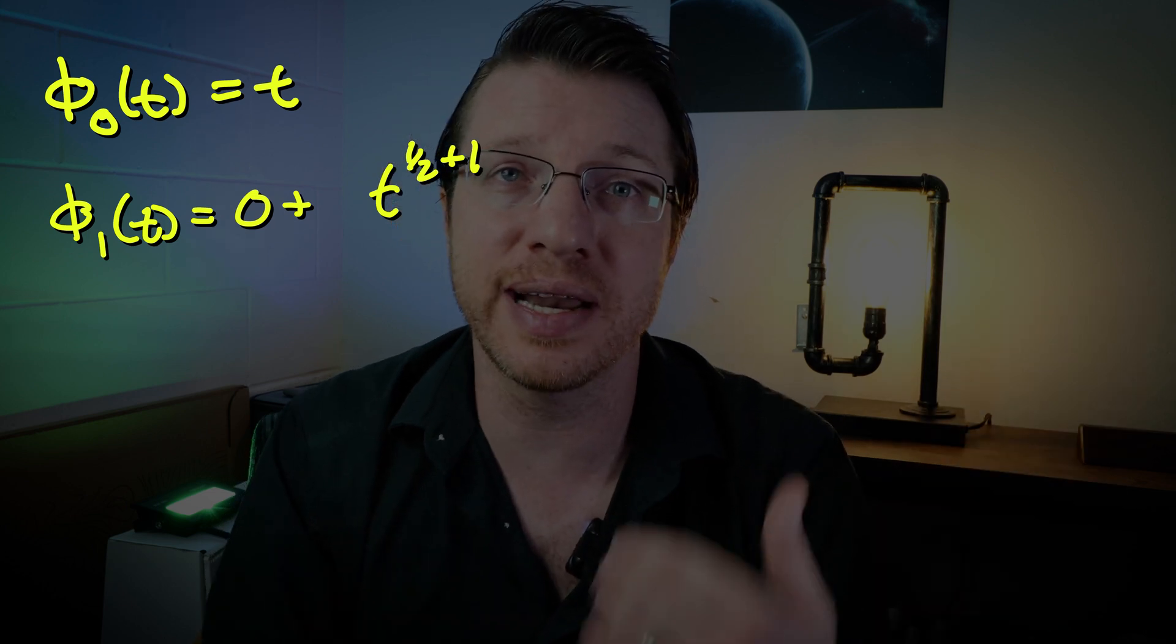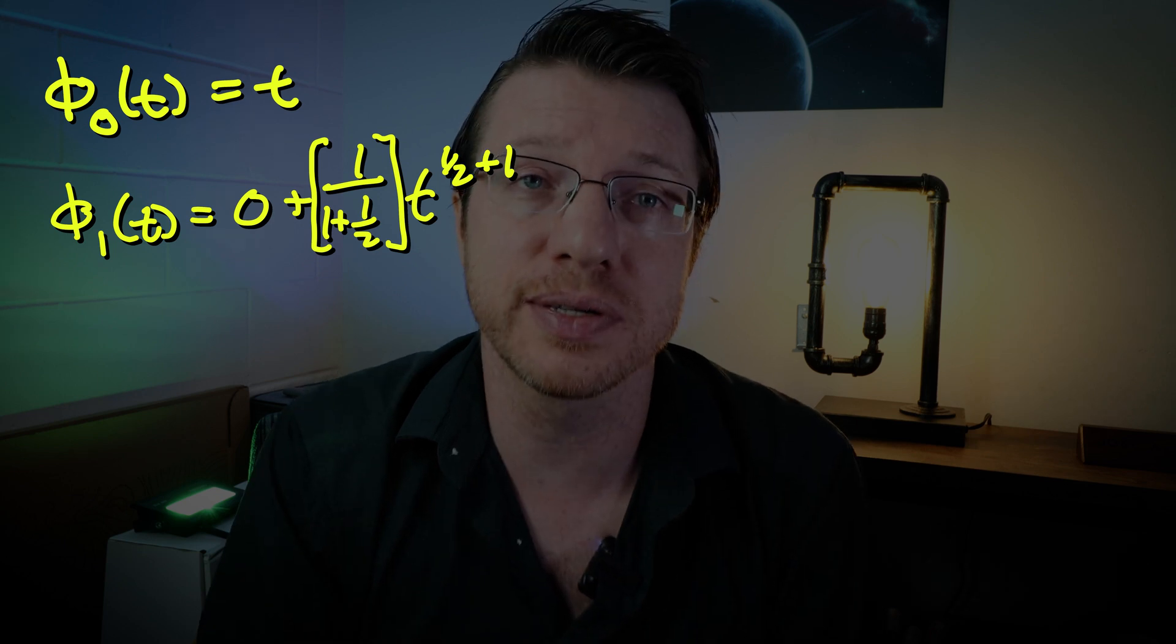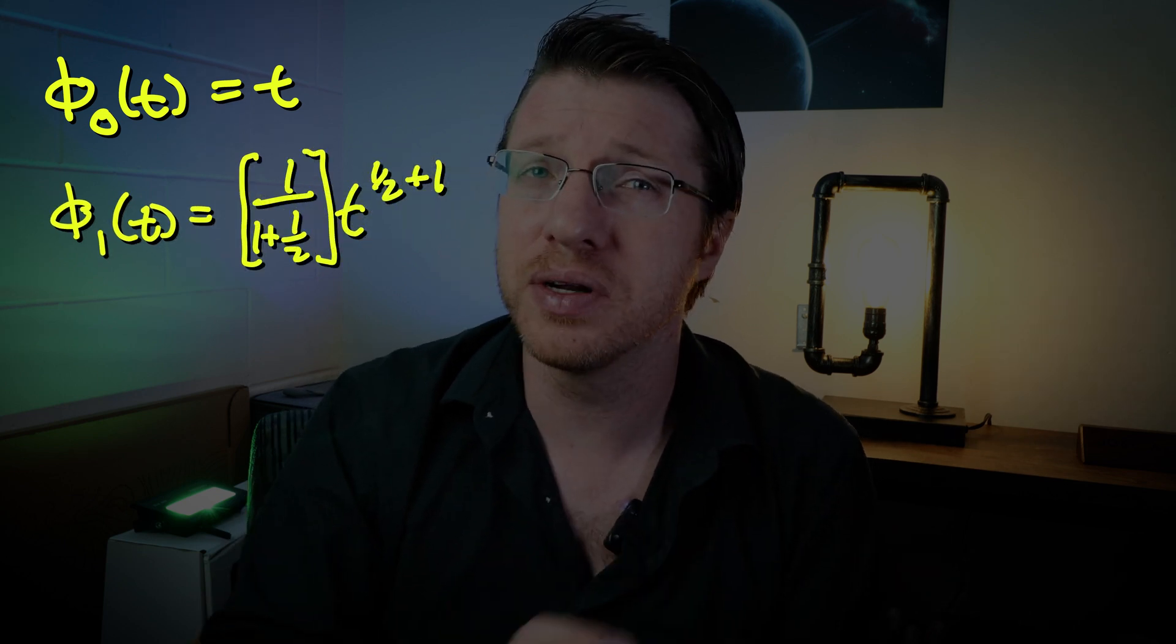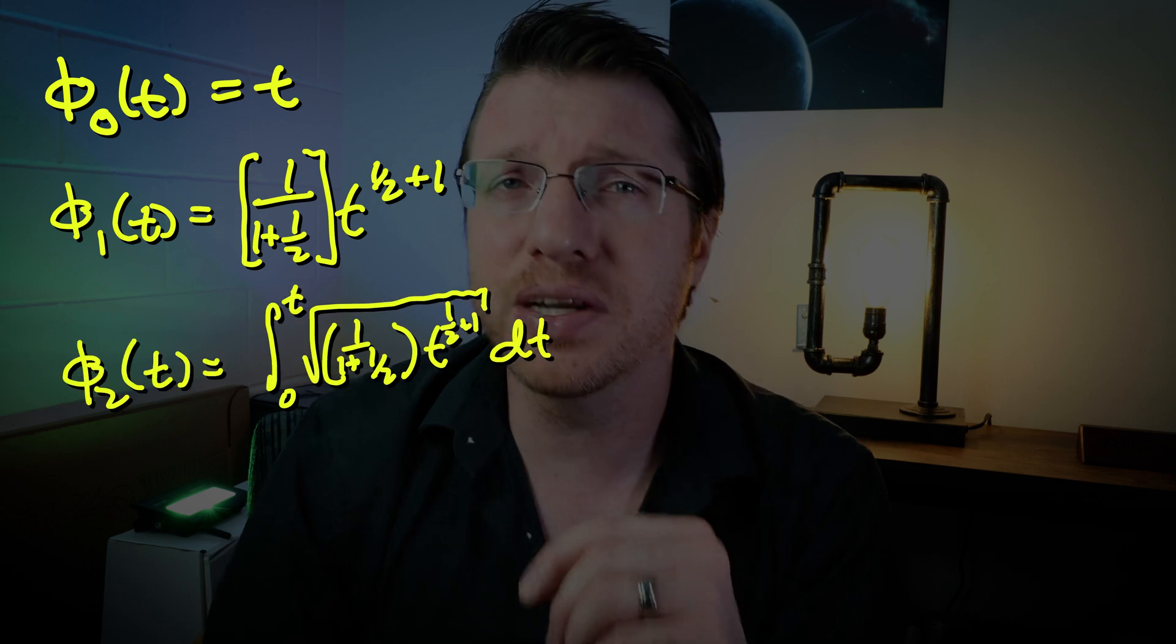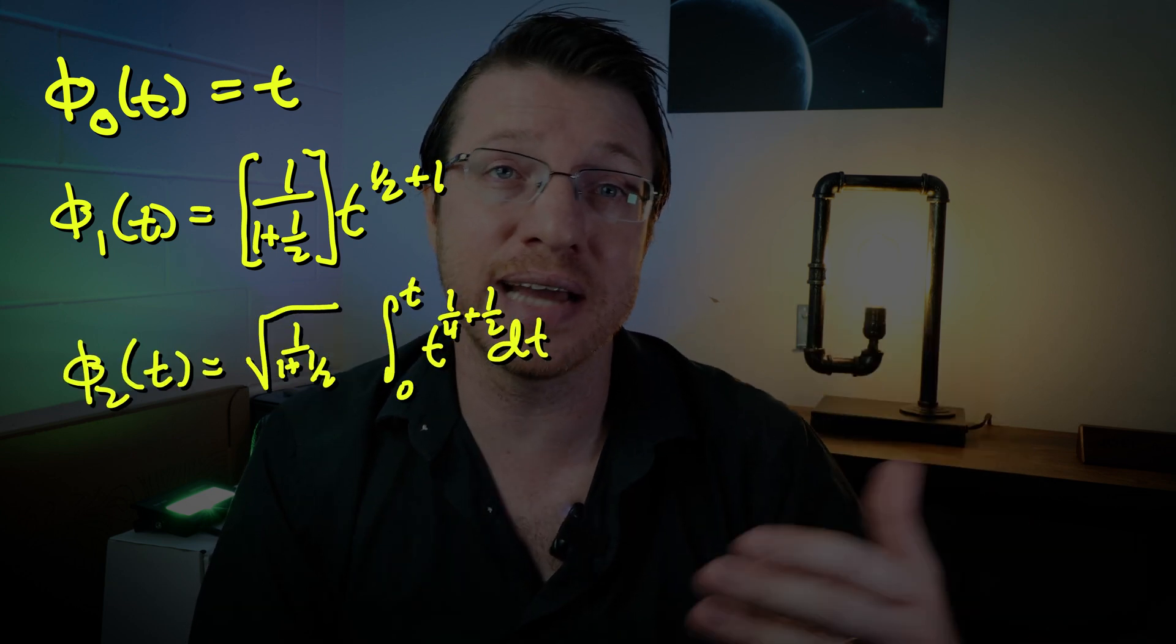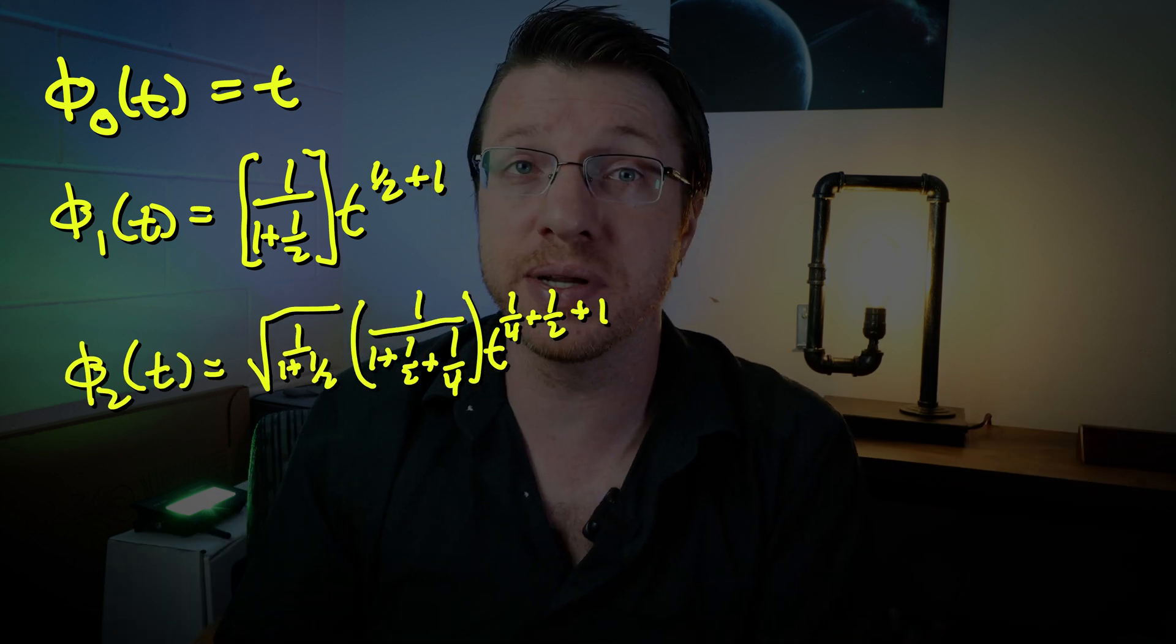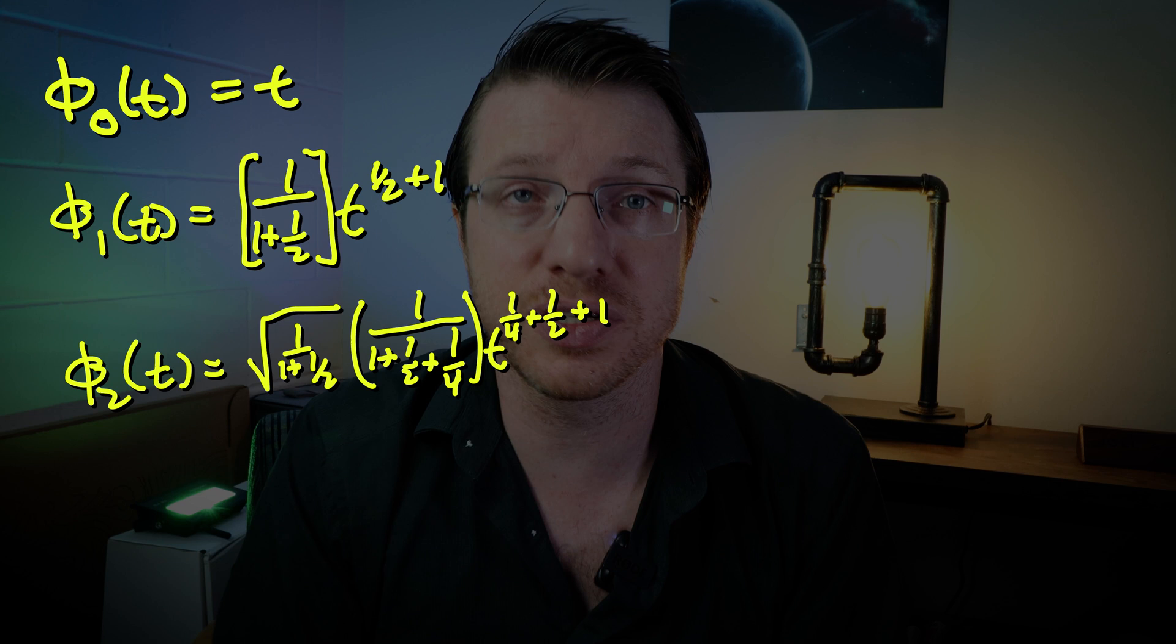So the first application of Picard's iteration takes the exponent of t, halves it through the square root, and then increases it by 1 through integration. This new exponent is divided in front from the anti-differentiation process and changes the coefficient. Let's be careful not to simplify the exponent or the pattern will actually be a lot harder to see. The next iteration sees the coefficient square rooted and the exponent is halved again and then increased by 1.